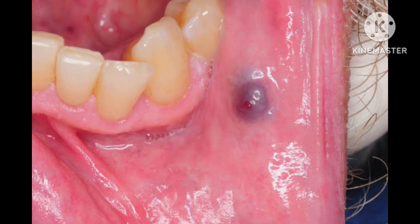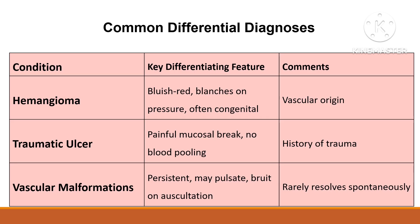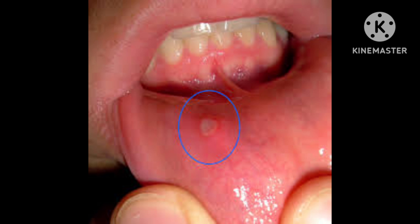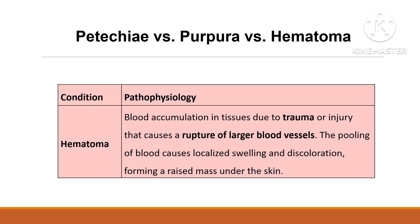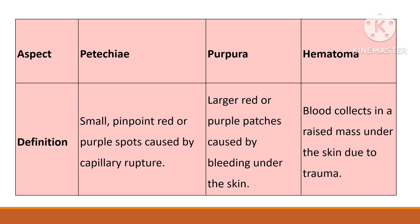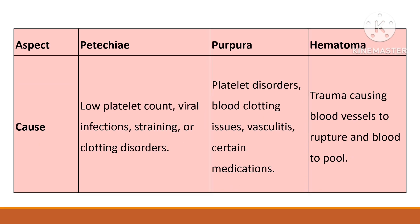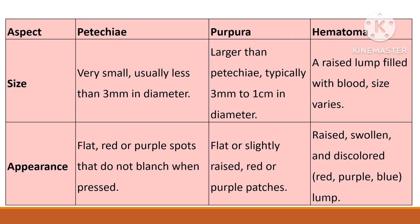Traumatic ulcer displays a painful mucosal break but lacks blood pooling. Vascular malformations are persistent, sometimes pulsatile lesions often accompanied by an audible bruit. Petechiae and purpura are related to bleeding disorders and present as flat discoloration under the skin, unlike hematomas which are raised, swollen lumps filled with blood due to trauma.